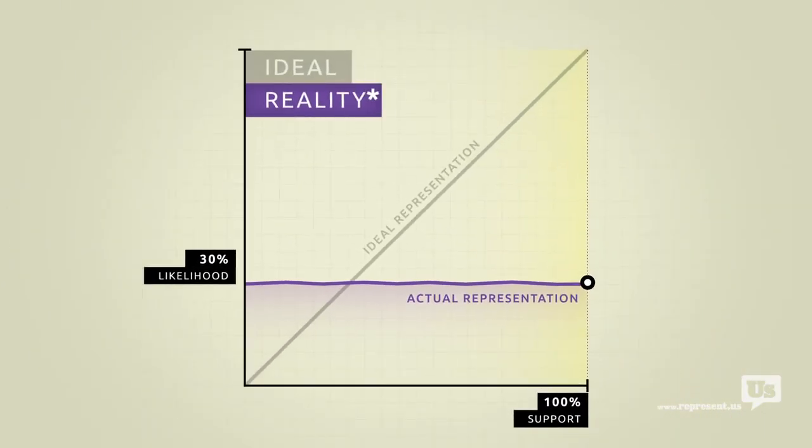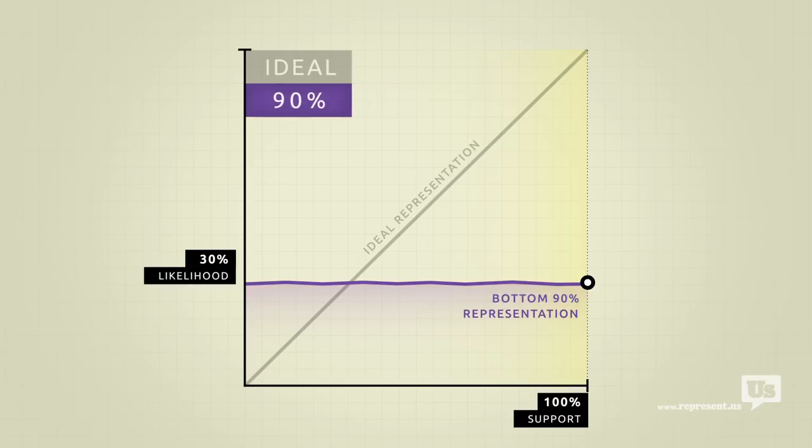But there's a catch. This flat line only accounts for the bottom 90% of income earners in America. Economic elites, business interests, people who can afford lobbyists, they get their own line.